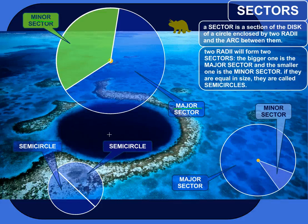A sector of a circle. A sector is a section of the disc of a circle enclosed by two radii and the arc between them. What does all that mean?